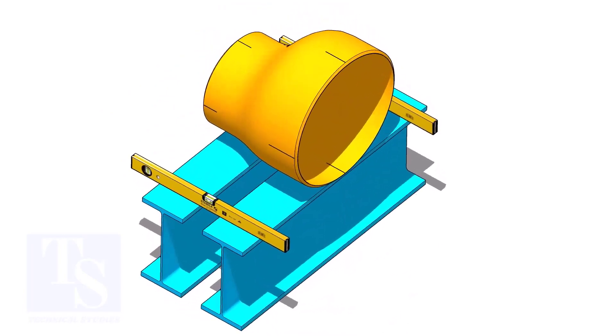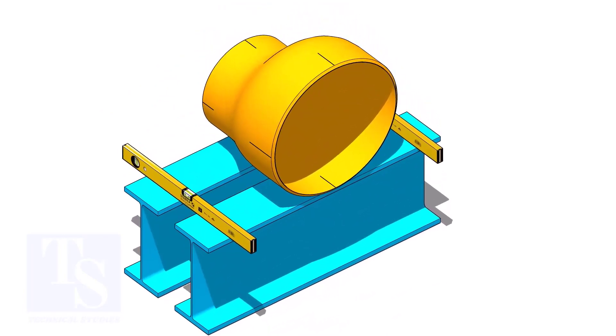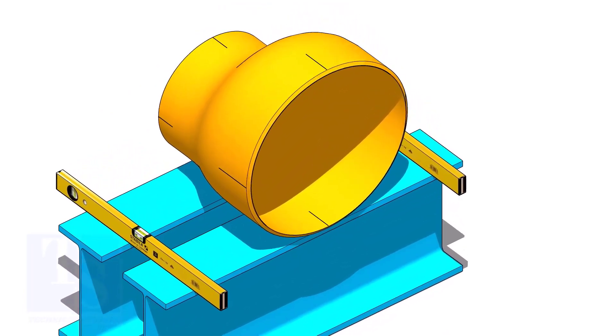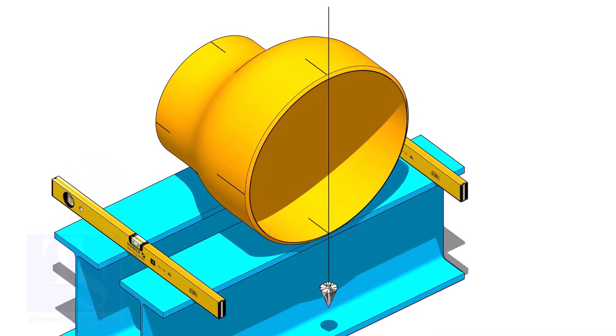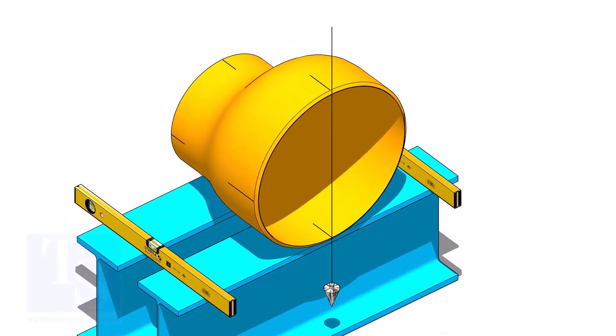Put the reducer on supports. Plumb the reducer and put packing on both sides.